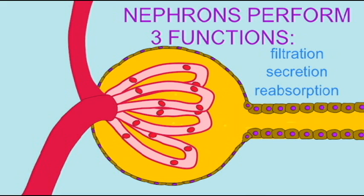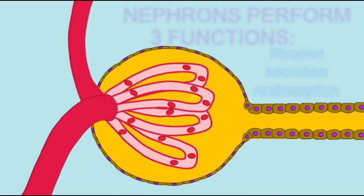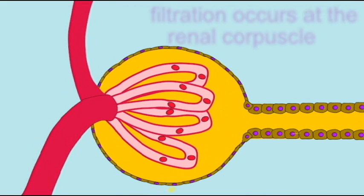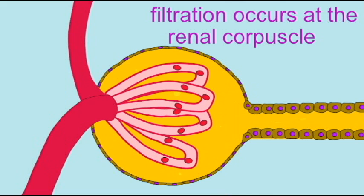Of these three processes, only the first, the filtration of the blood, occurs in the renal corpuscle. The remaining two occur along the renal tubule.